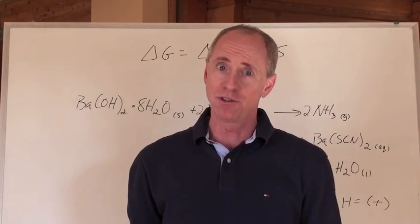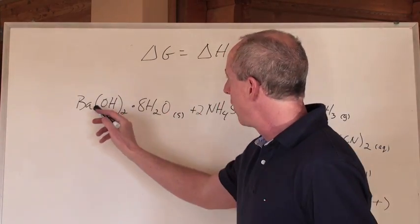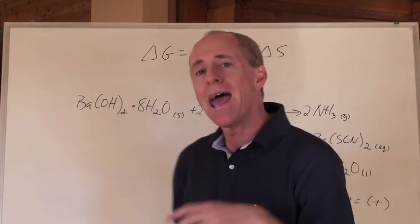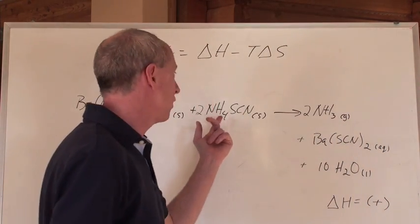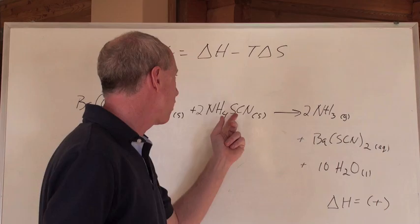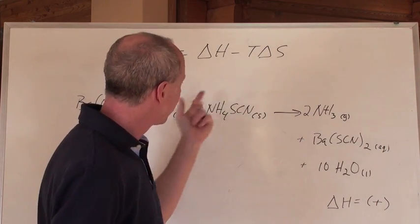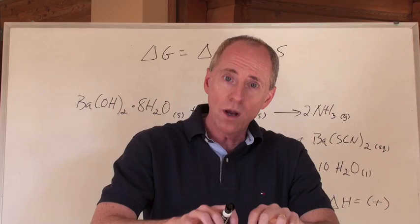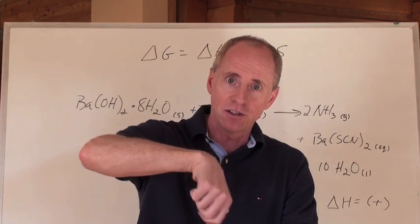This one's one of my favorite reactions as a chemistry teacher. I take some barium hydroxide octahydrate, a chemical I got in the storeroom, and I mix it with a certain quantity of ammonium thiocyanate. I take those two chemicals, which are both solids, and I put them into one beaker and just take my stirring rod and stir it.